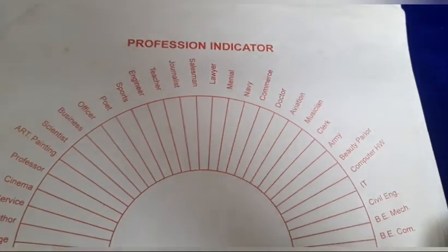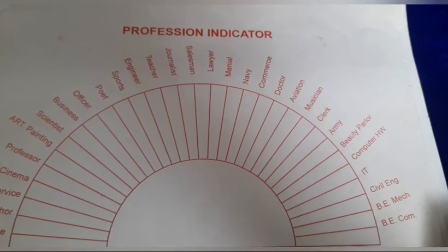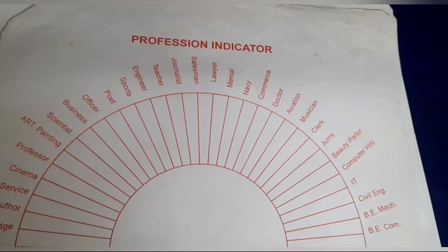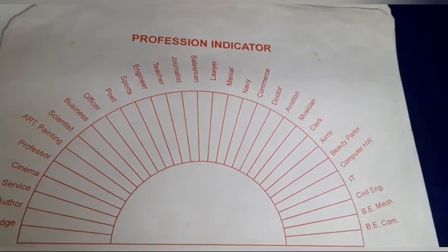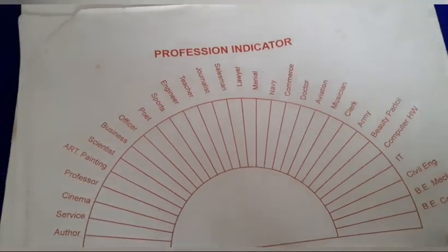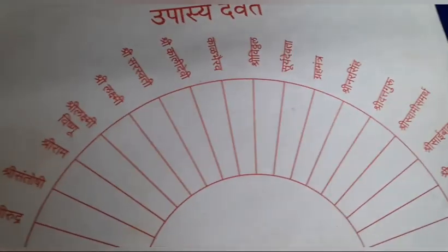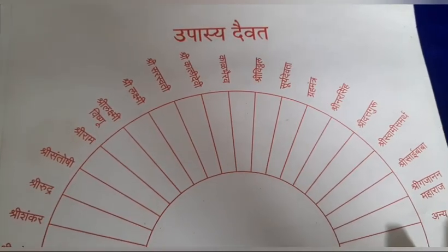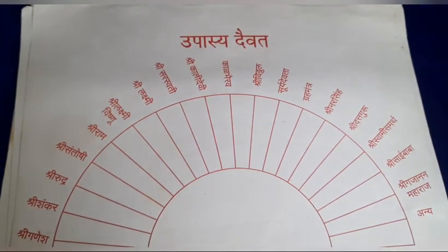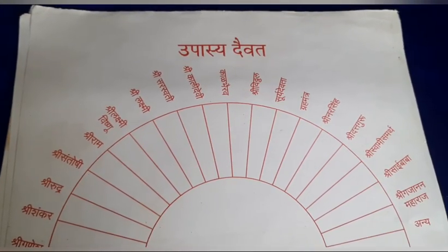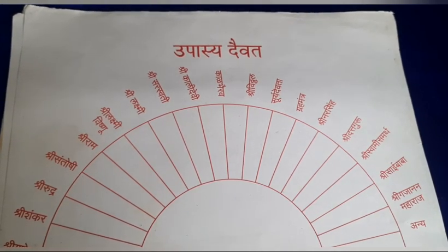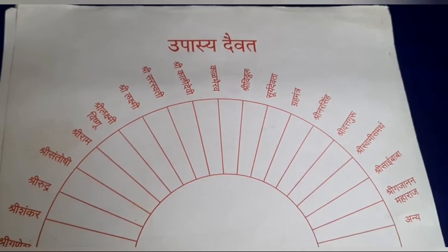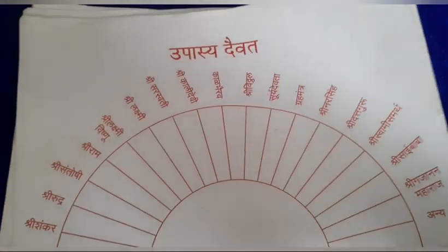Then there is a Profession Indicator. Lots of people ask me — their kids are very small — in which profession will my child go? So this is the professional indicator for that. Then there is an Upasya Daivata chart. Lots of people ask me what they should do to avoid problems — which Devi or Devata they should worship. So this chart can be used for that.